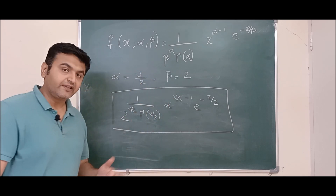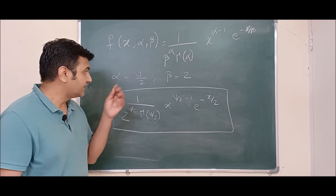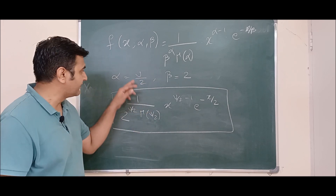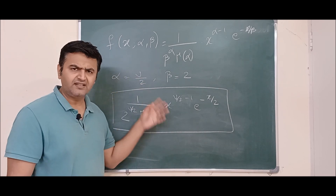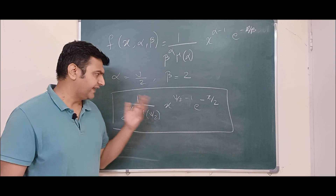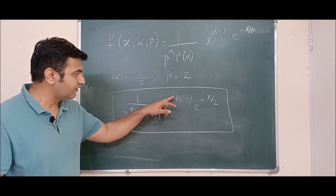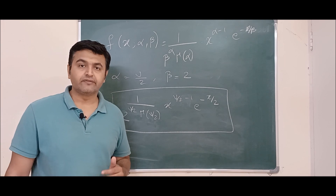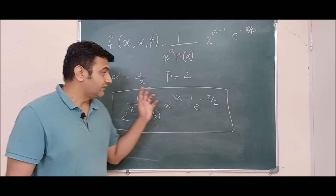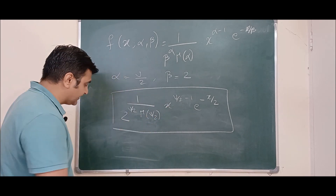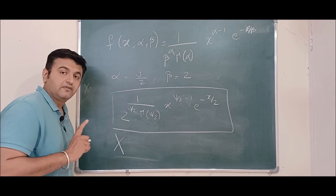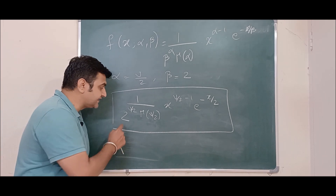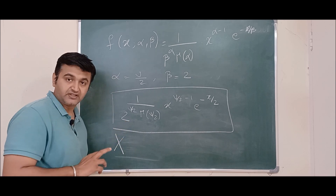Earlier I used n as notation, but since I'm referring to the Walpole book, I'm writing nu — you can also write n, it doesn't matter. At the end, whatever notation you use, it represents the degree of freedom. So the definition is: a random variable X follows chi-square distribution if its density function is given by this function.